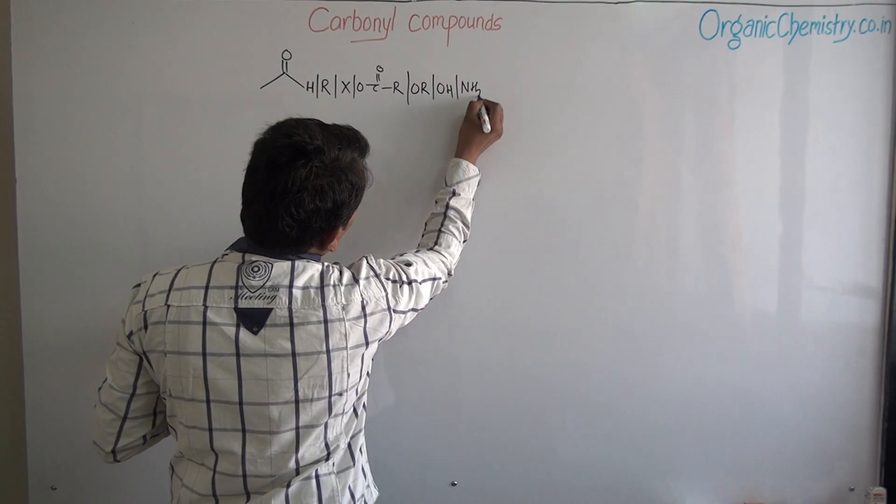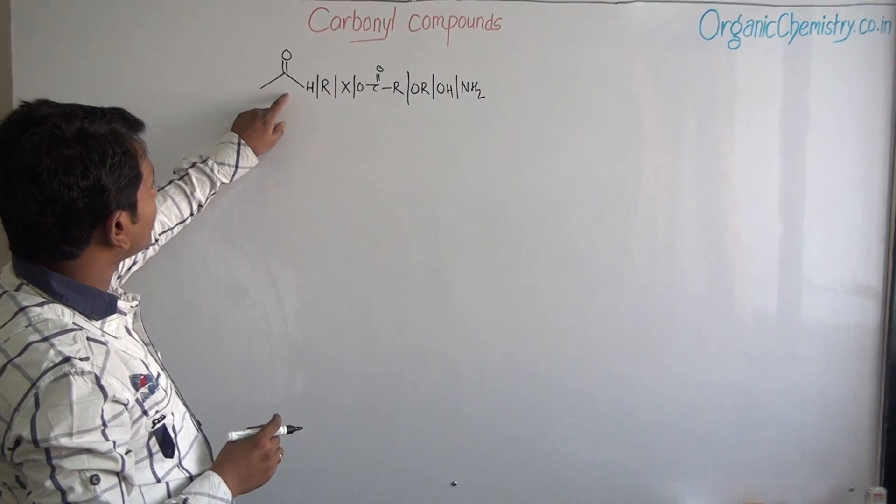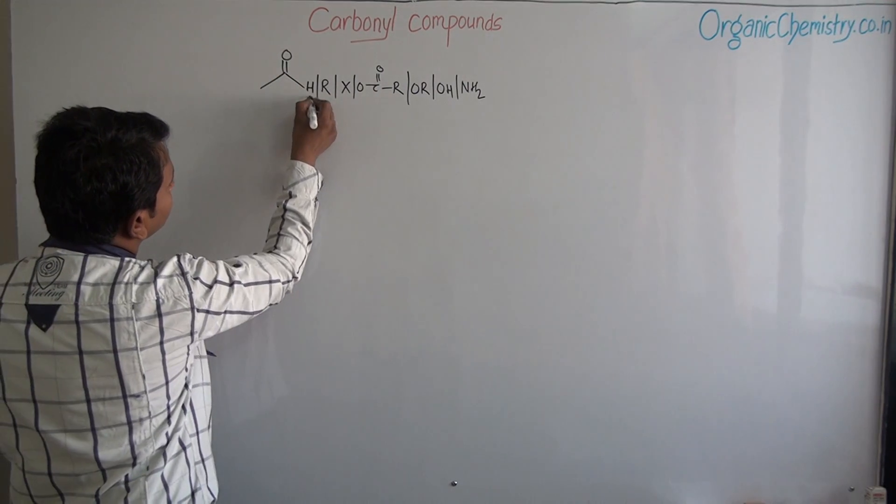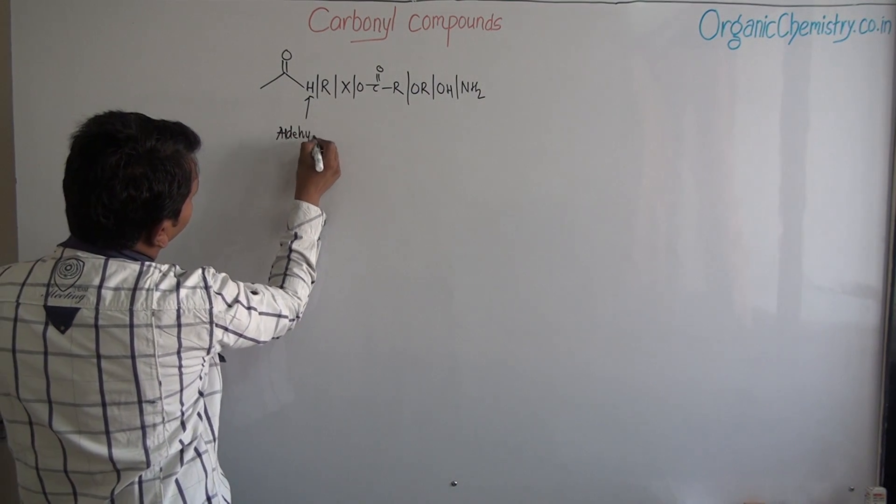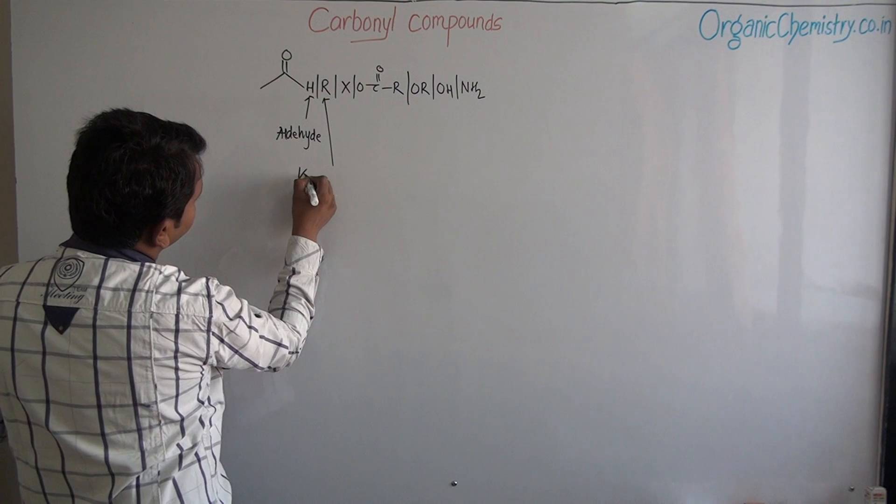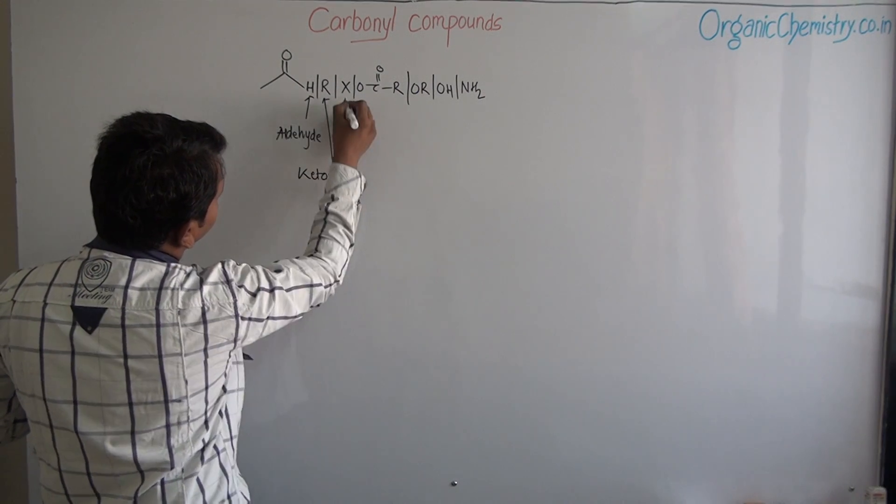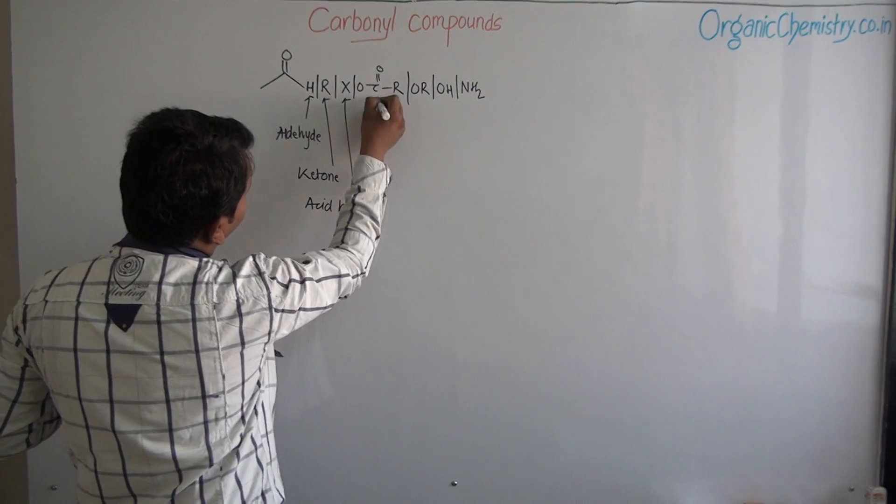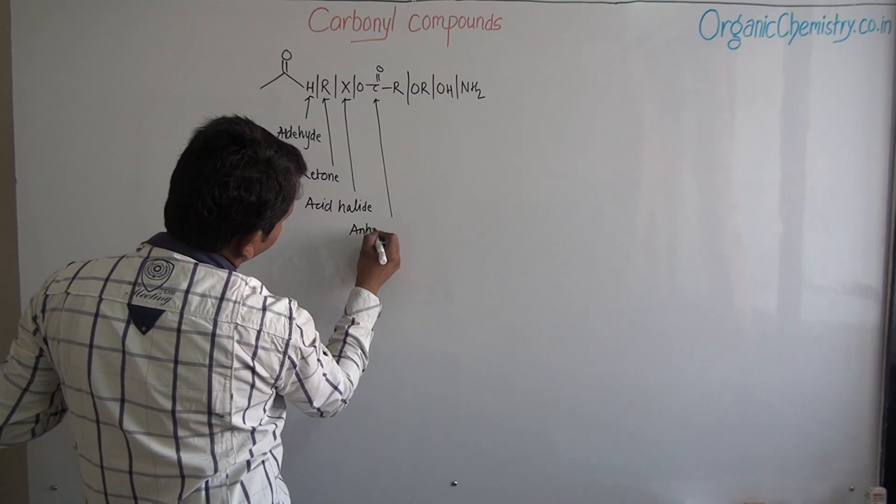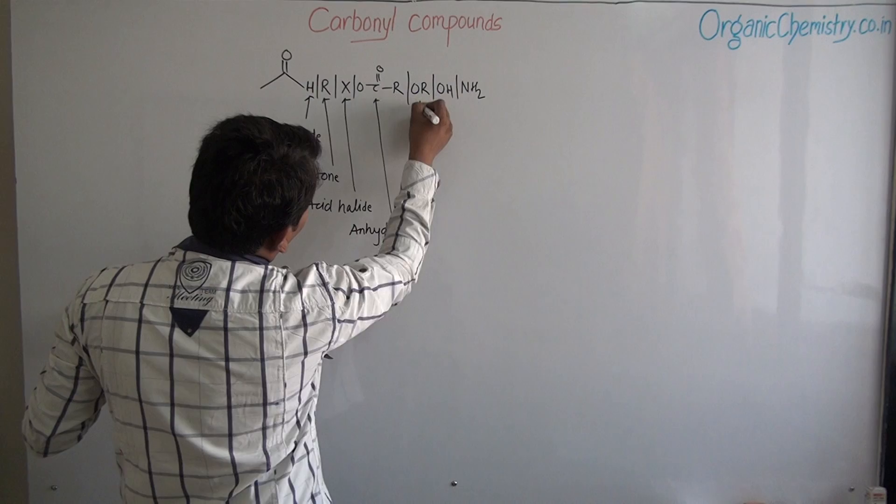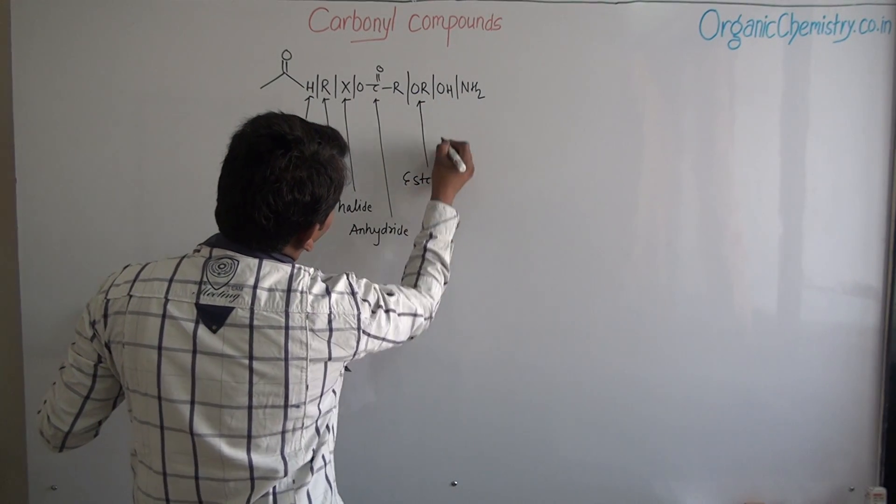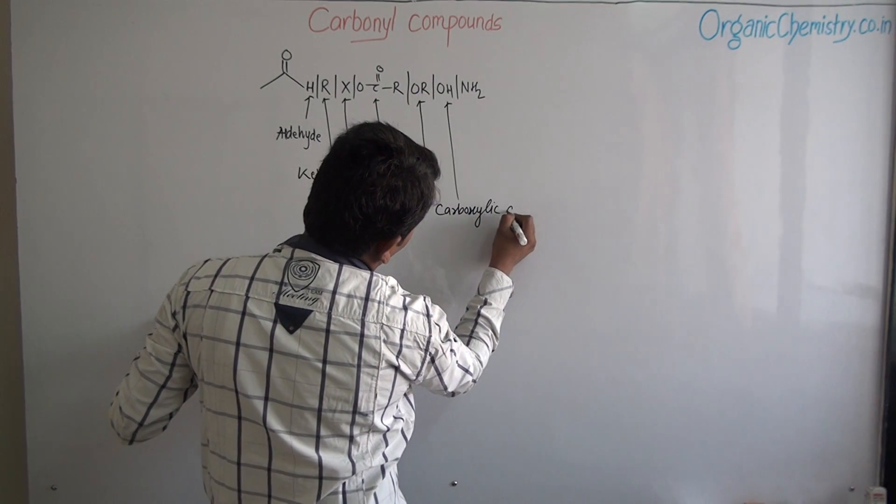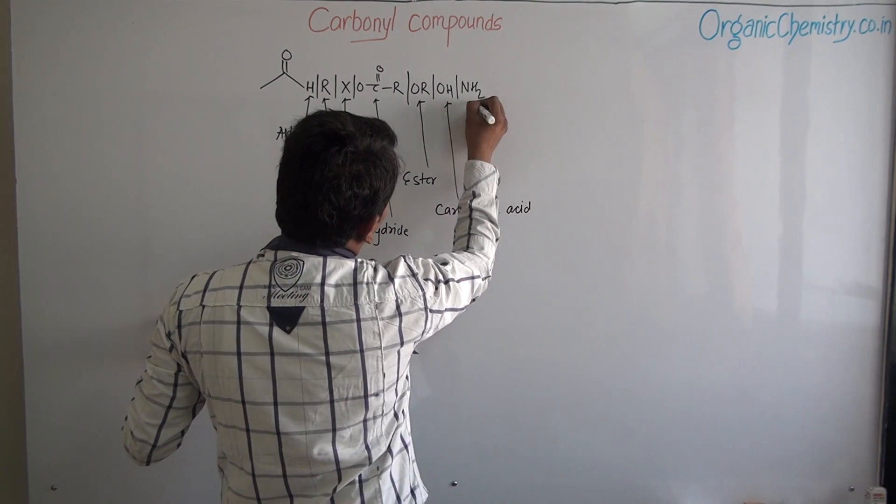So carbonyl compounds are those compounds which have presence of CO group. May be aldehyde, ketone, acetylide, anhydride, acetyl, carboxylic acid, or amide.